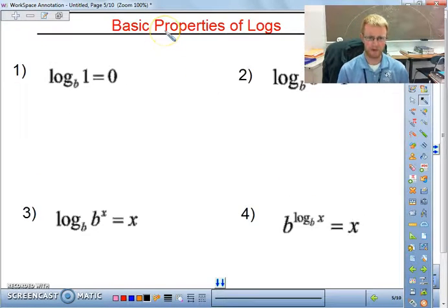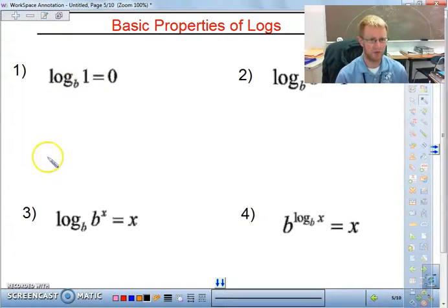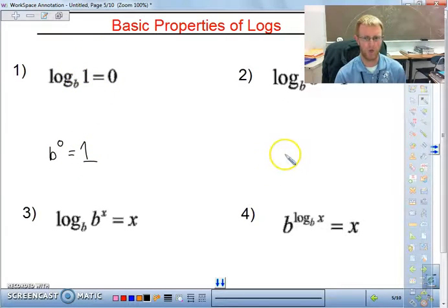Okay, let's talk about some basic properties of logs. So here we have log base b of 1 equals 0. Basically, what it's saying is no matter what the base here is, it's going to be equal to 0. Why? Because if we write out our basic properties or what we know about exponential functions, b to the 0 power will always equal 1. Anything to the 0 power will always equal 1. That's why this property holds all the time.